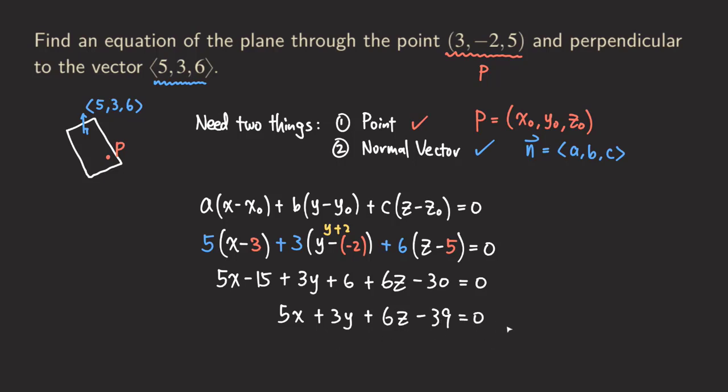So what do we get here? We just move the 39 to the other side. So we get 5x + 3y + 6z is equal to, adding 39 to both sides of the equation, 39. Then that's our final answer.